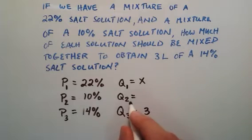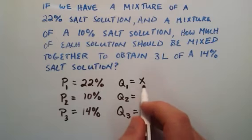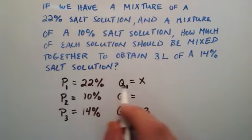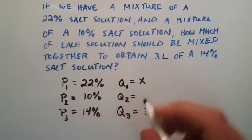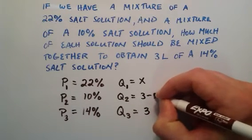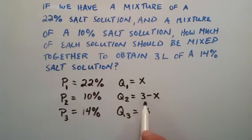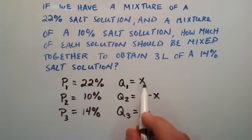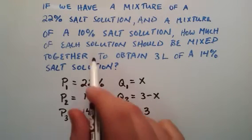Now going back to quantity two: if our end result is going to be three liters, and we've already used x of those liters for the 22% solution, then the quantity we need for the 10% solution is going to be the end result minus the amount we used for the first solution. So we have the total solution minus the amount used for the first solution, which gives us the quantity of solution needed for the 10% solution.